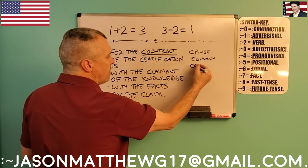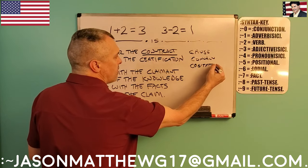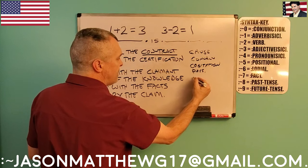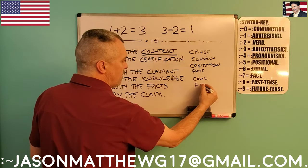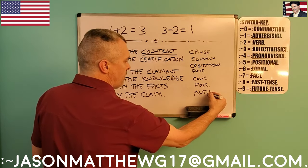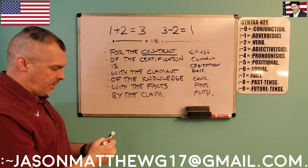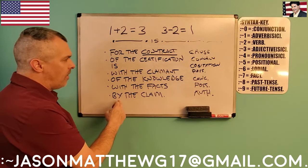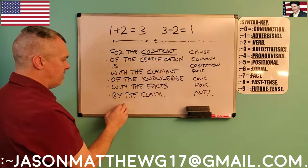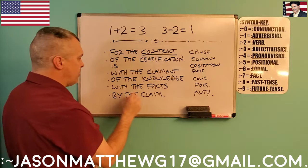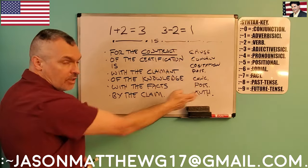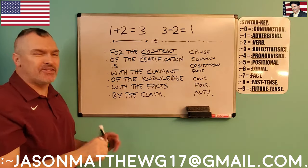This is the cause of the sentence. The structure is: cause, then cogitation or verb, then possessive, then another concern, then possessive, then an authority — and an authority. And it works the same backwards too. This can become the cause: 'For the claim of the facts is with the knowledge of the claimant with the certification by the contract.' You see how this works?